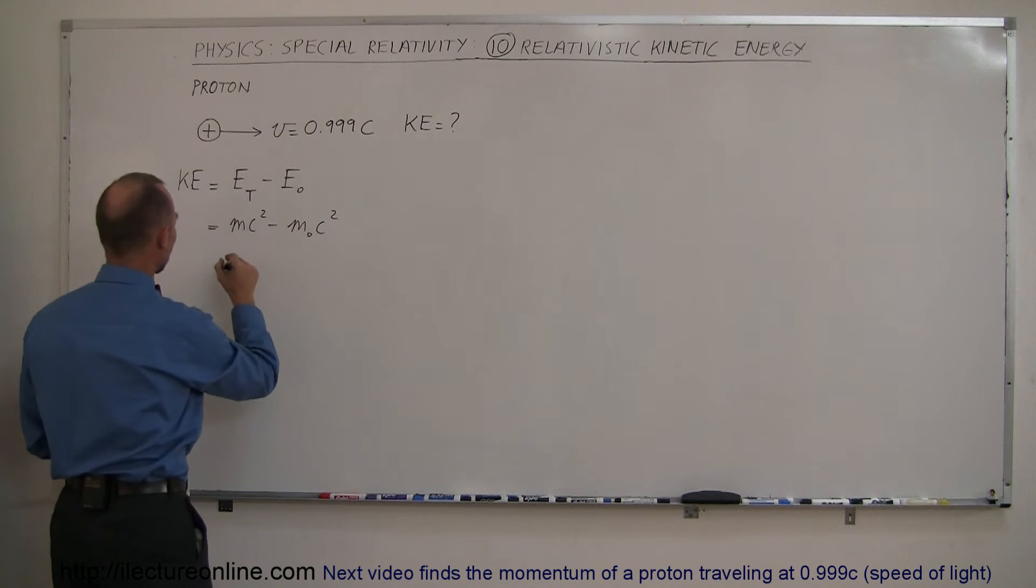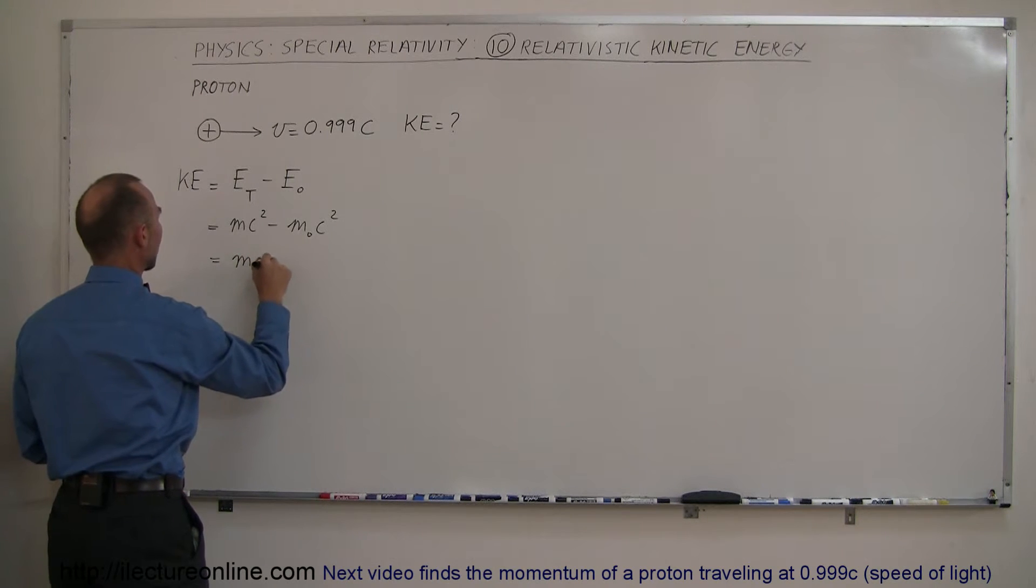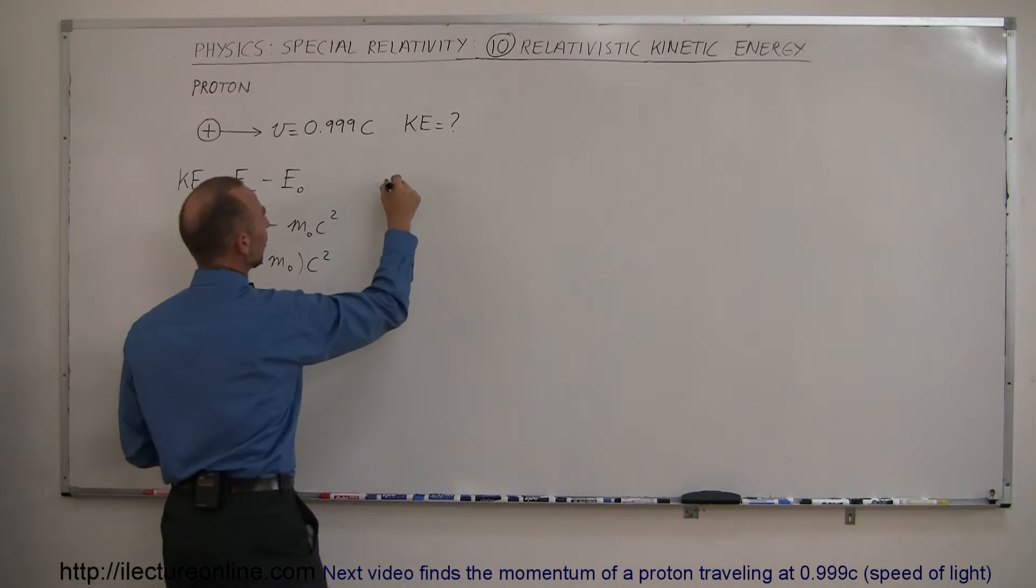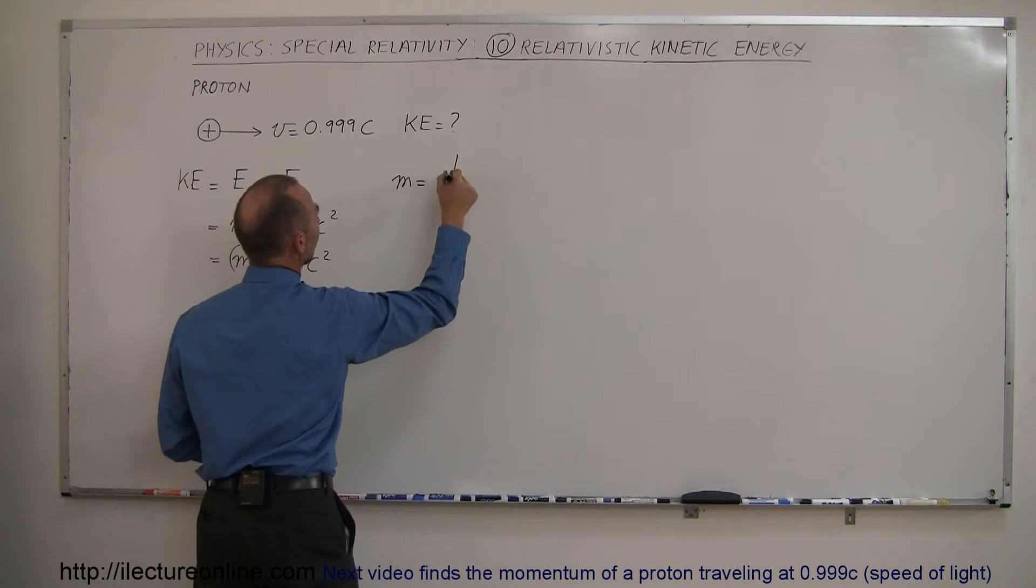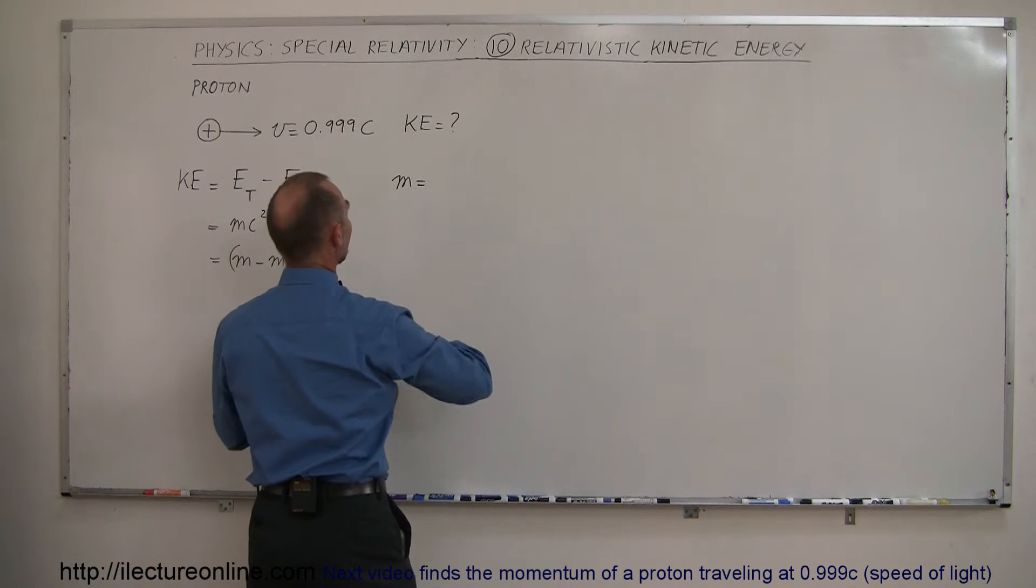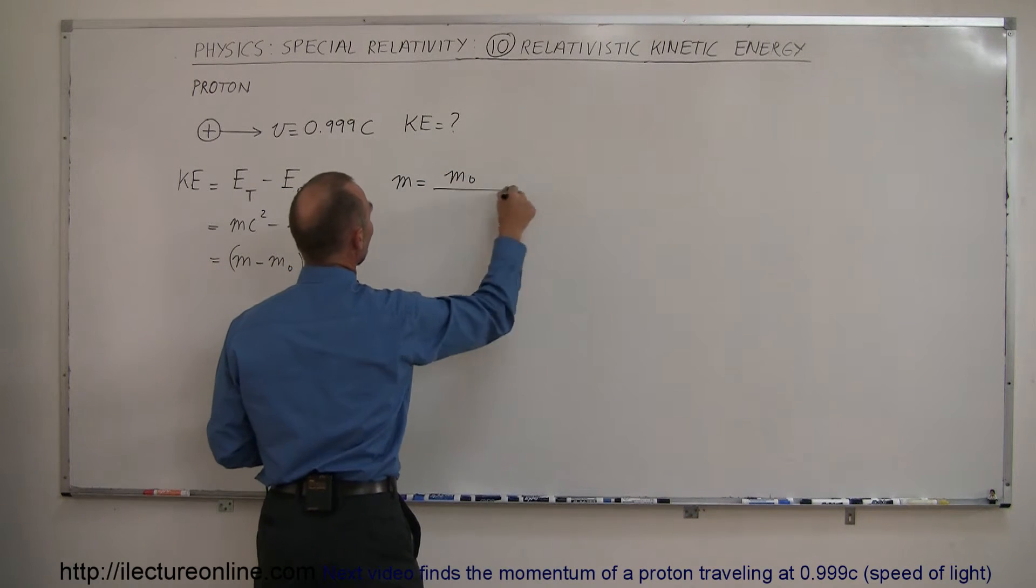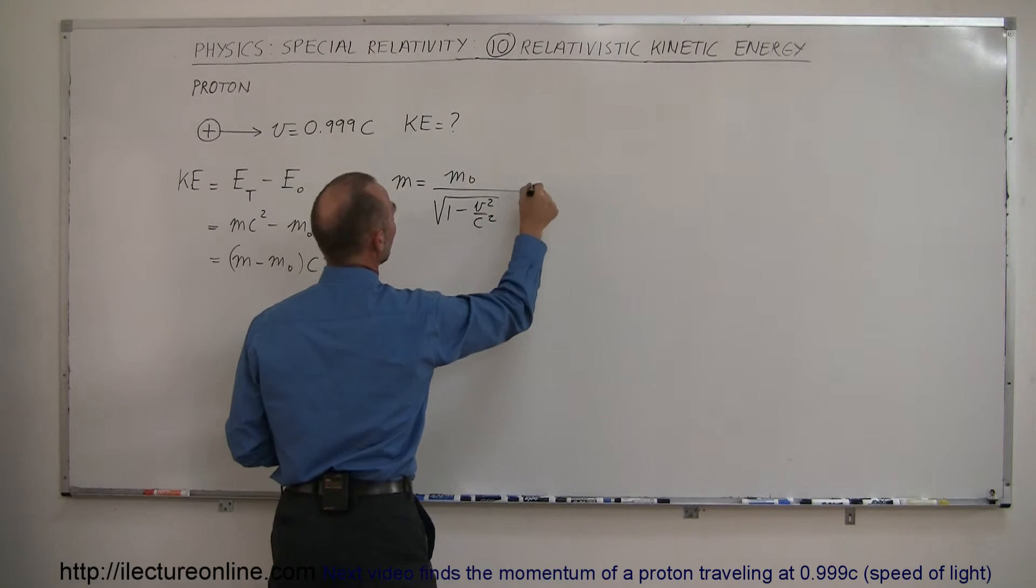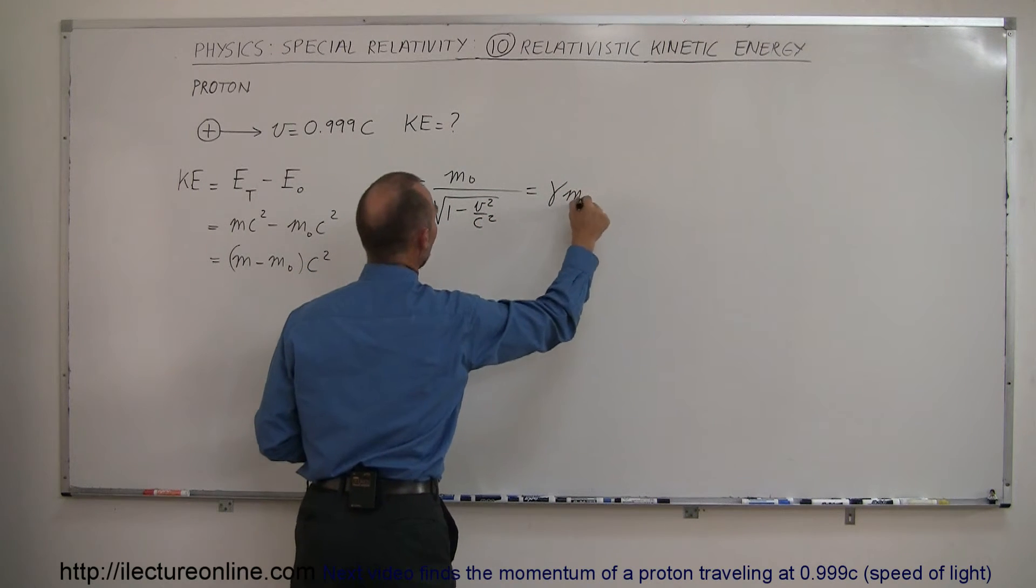And first of all, we can factor out a c squared, so this becomes m minus m sub-naught times c squared. And of course, since m is equal to m sub-naught, the rest mass energy, divided by the square root of 1 minus v squared over c squared, which is equal to gamma times m sub-naught.